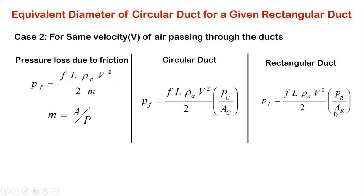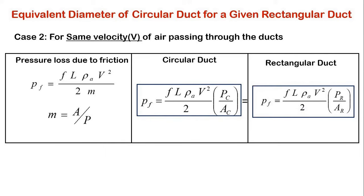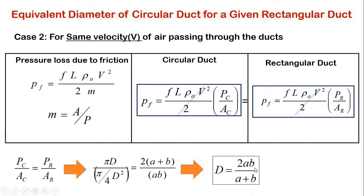Similarly for rectangular duct we get the corresponding equation. Since pressure loss, friction factor, length of duct, density of air, and velocity of air in circular and rectangular ducts are all the same, we equate the two equations. The common terms cancel out, leaving P_C divided by A_C equals P_R divided by A_R. Substituting the wetted perimeter and cross-sectional area formulas — pi·D and (pi/4)·D squared for circular duct, and 2·(A+B) and A·B for rectangular duct — and solving for D gives: D equals 2AB divided by (A + B).